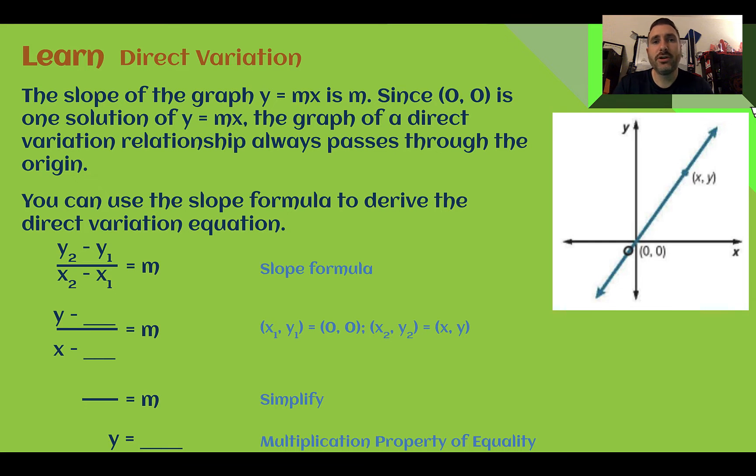So first let's look at how to derive our direct variation equation of y equals mx. The slope of our graph is m, which is found in our y equals mx. And since it's a proportional relationship, we know that it goes through the point 0, 0, meaning that it's a solution since it's on the line. We know that's a solution because direct variation and proportional relationships always pass through 0, 0.